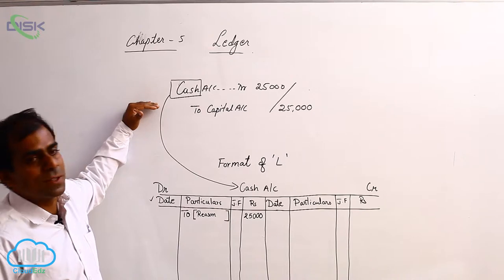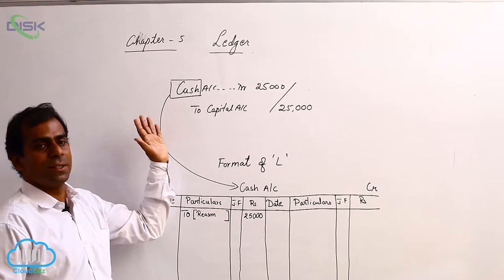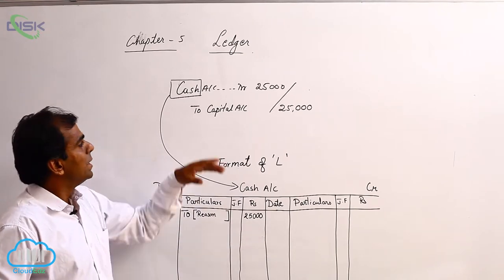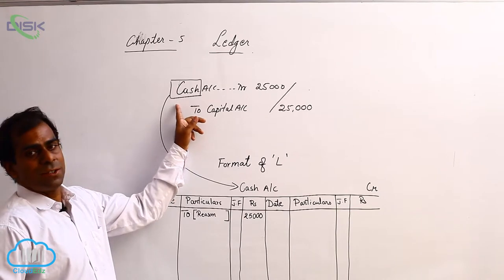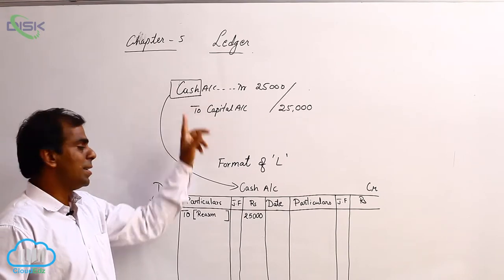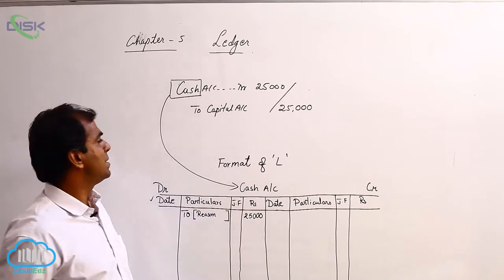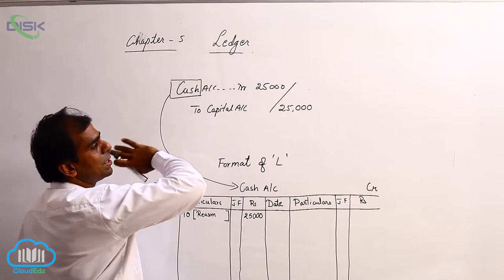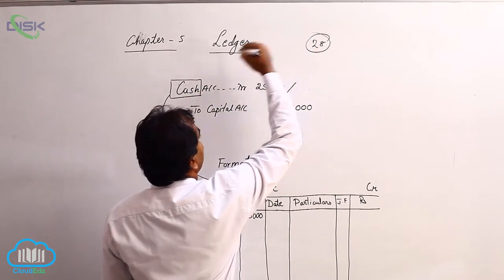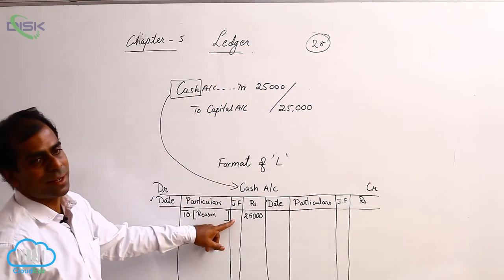For reference in future, you might have to again refer the journal when you are looking at your cash account in the ledger. The page number from which you have brought this posting from the journal is entered in the journal folio column. Let us say this journal entry in your journal book is on page number 28. So, that page number we will be writing here.